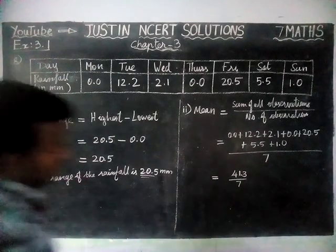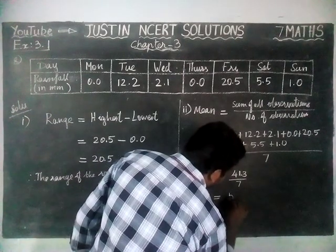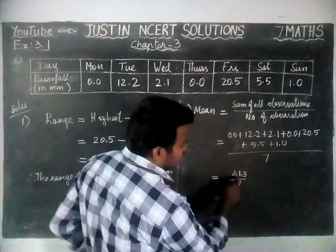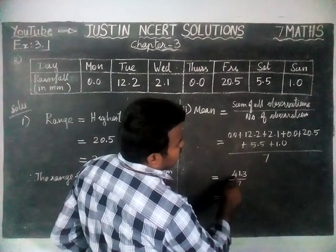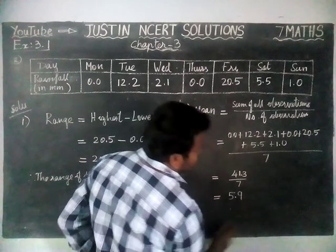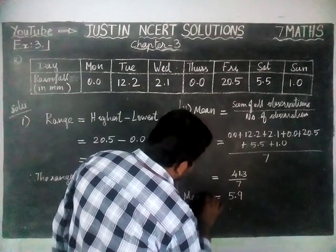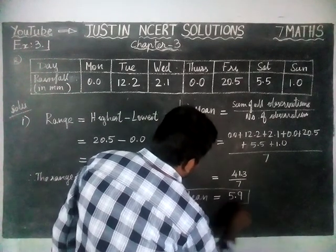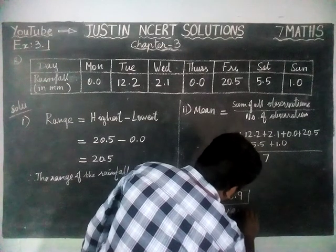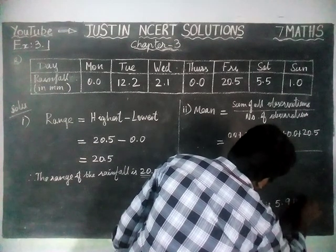We are going to divide 41.3 by 7. 5 sevens are 35, remaining 6.3. We consider 63, making the decimal point: 9 sevens are 63. So the mean rainfall is 5.9 millimetres.